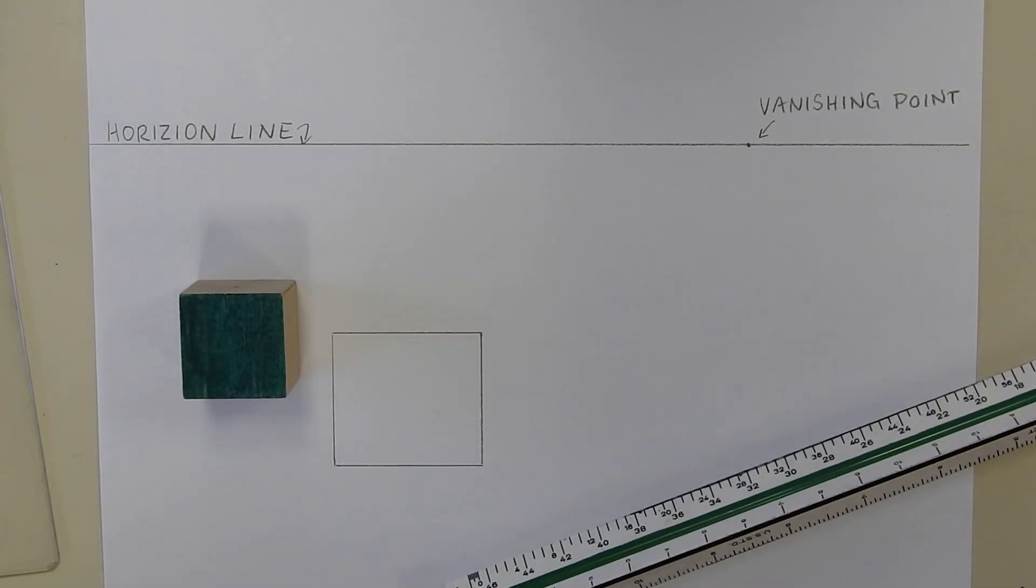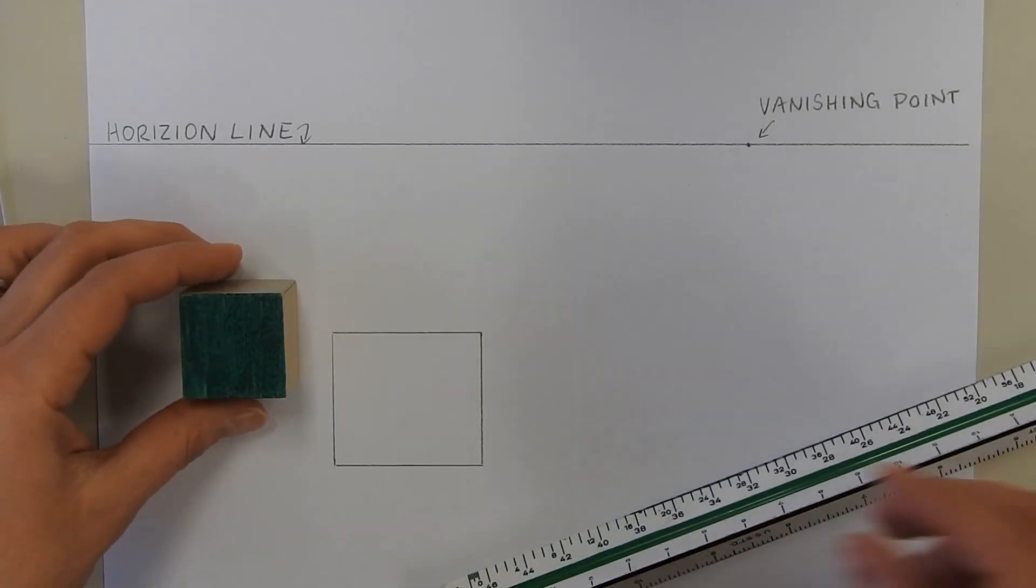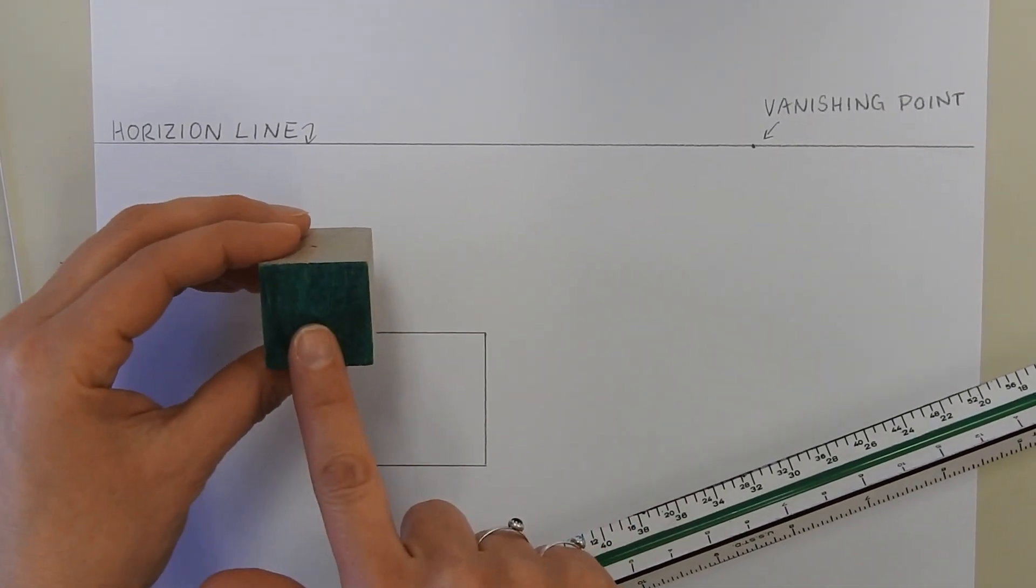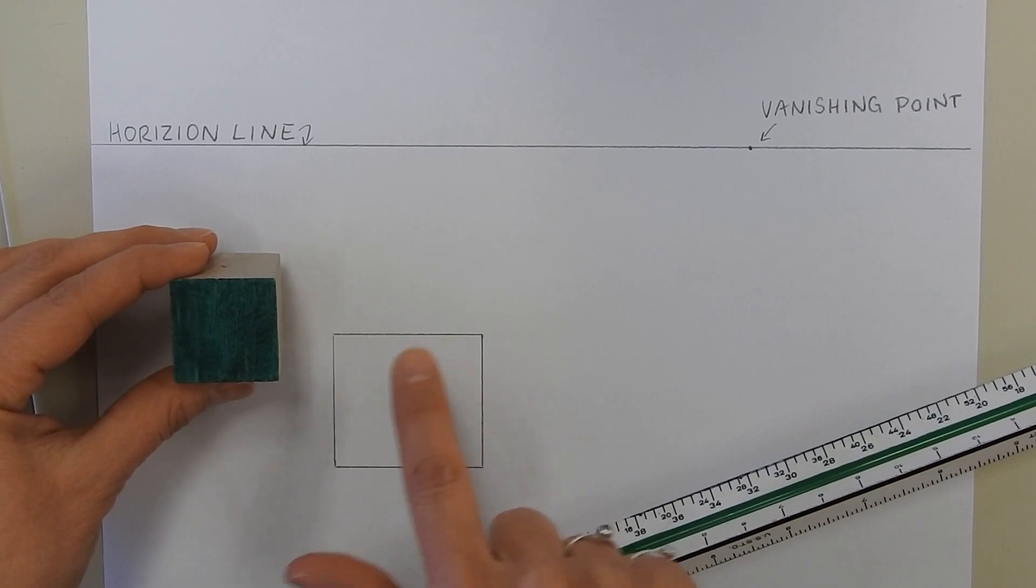When we draw a cube in one point perspective, the viewpoint that we are drawing is that of this front face of the cube. So that's why we start with a shape.